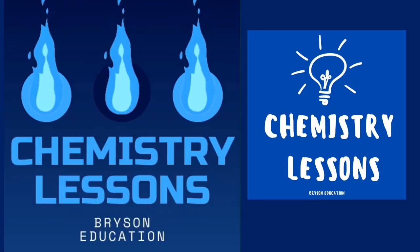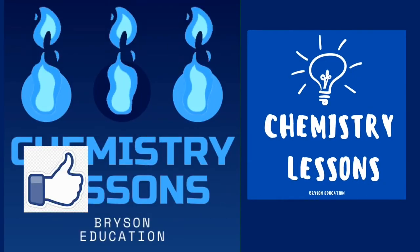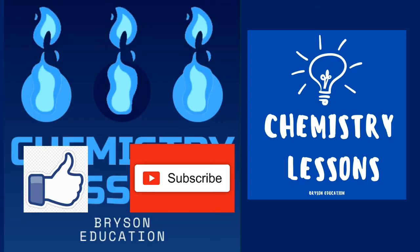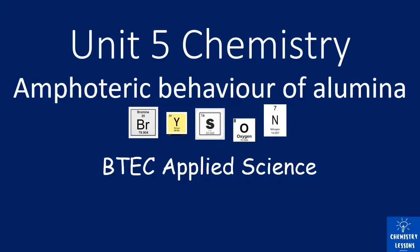Welcome to my channel on chemistry lessons. Please make sure you like and subscribe so you don't miss out on future content. This is a BTEC Applied Science lesson, Unit 5 Chemistry, and it looks at the amphoteric behavior of alumina.